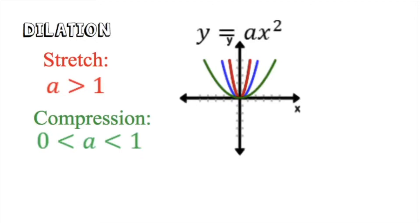Dilation means the parabola is going to either stretch or compress depending on the number in front — that's the a in a(x − h)² + k. If a is greater than one, it's going to stretch, which actually makes the parabola look thinner because the y-value increases by that multiple, making the slope steeper. If a is between zero and one, it compresses — you're multiplying by a decimal, so the distance between points is small and the parabola gets wider.